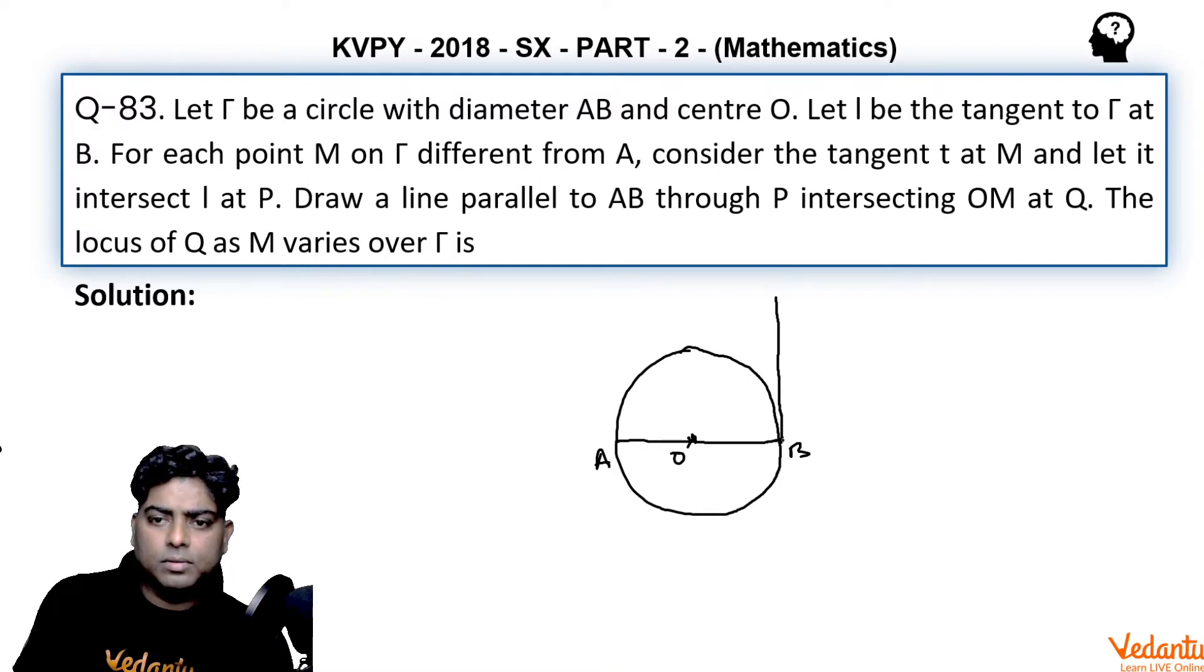This is line I, and the circle is called Γ. For each point M on Γ different from A, consider the tangent t at M, so a tangent is drawn.